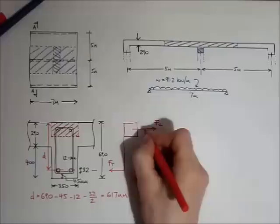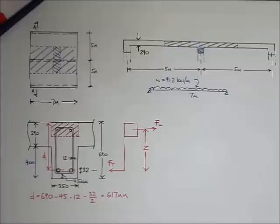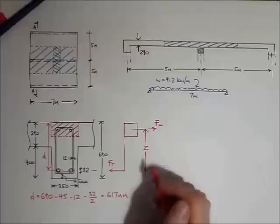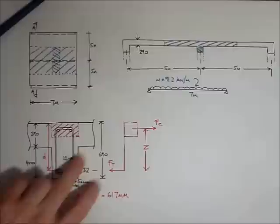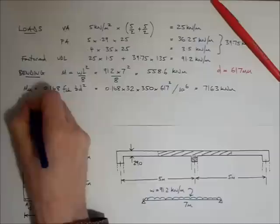So the compressive stress block here is approximately like this. So we end up with a compressive force here, Fc. And the lever arm, Z, is the distance between Fc and Ft. It's a difficult distance to ascertain in reinforced concrete design because it varies according to the forces within the concrete section. So we're going to take a two-stage approach to working this out. The first stage is to calculate a factor of K.